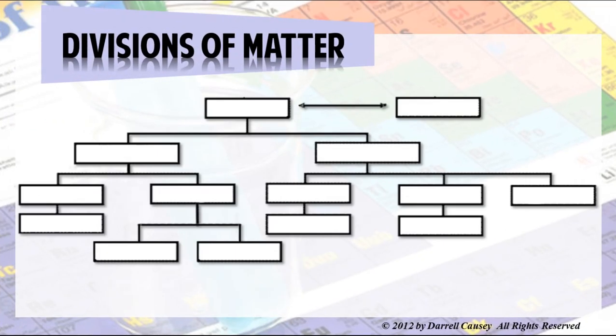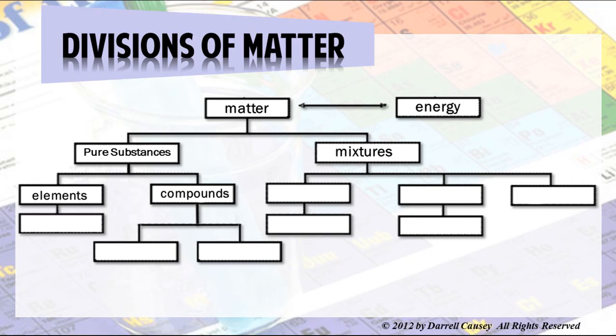All of the universe starts with energy and matter. Matter is broken up into two parts: pure substances and mixtures. It's very important that a person studying chemistry or even physics understand what matter is. The more you understand about matter, the easier it will be to wrap your mind around ideas about the atom. Pure substances are either elements or compounds. Elements break down to atoms, the building blocks of the universe. Compounds are combinations of elements, and they're either molecules or formula units, depending on the type of compound.